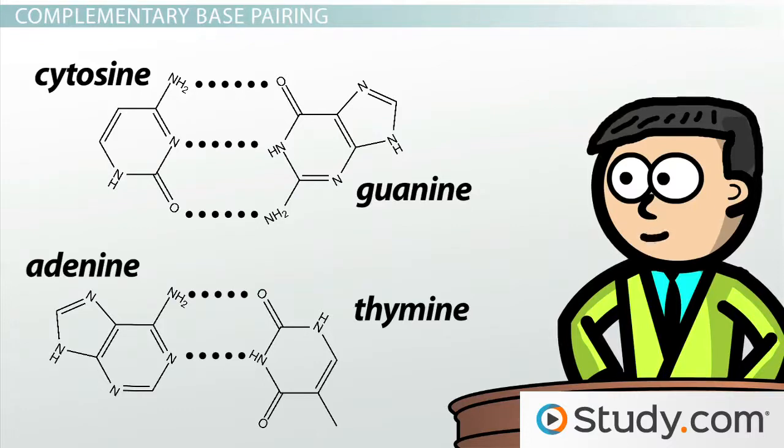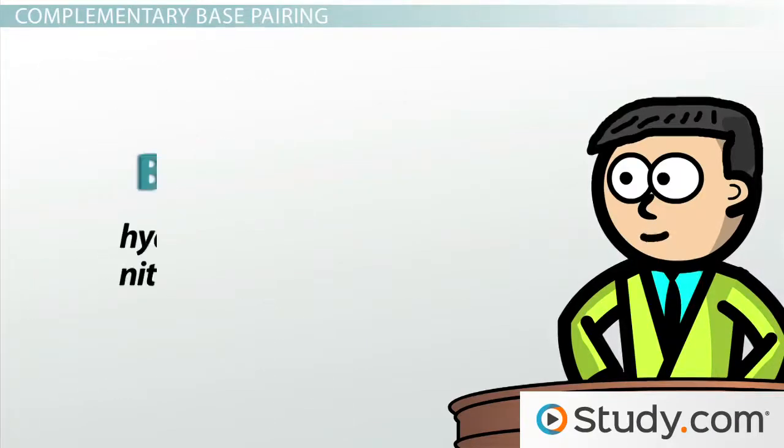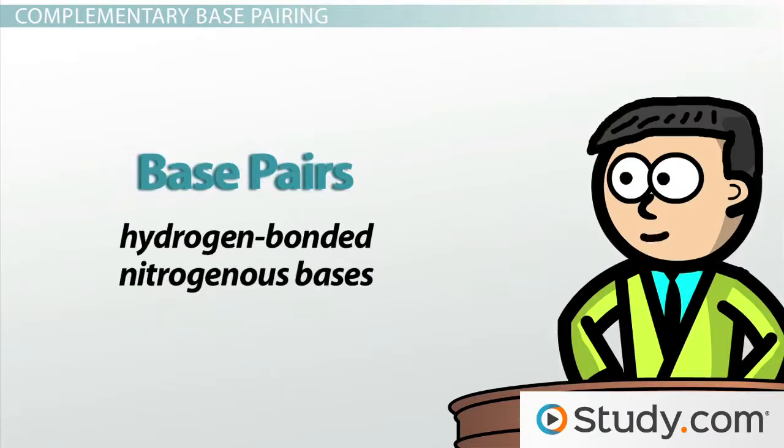It is called complementary base pairing because each base can only bond with a specific base partner. The structures complement each other in a way like a lock and key. C will only bond with G, and A will only bond with T in DNA. Because of complementary base pairing, the hydrogen-bonded nitrogenous bases are often referred to as base pairs.